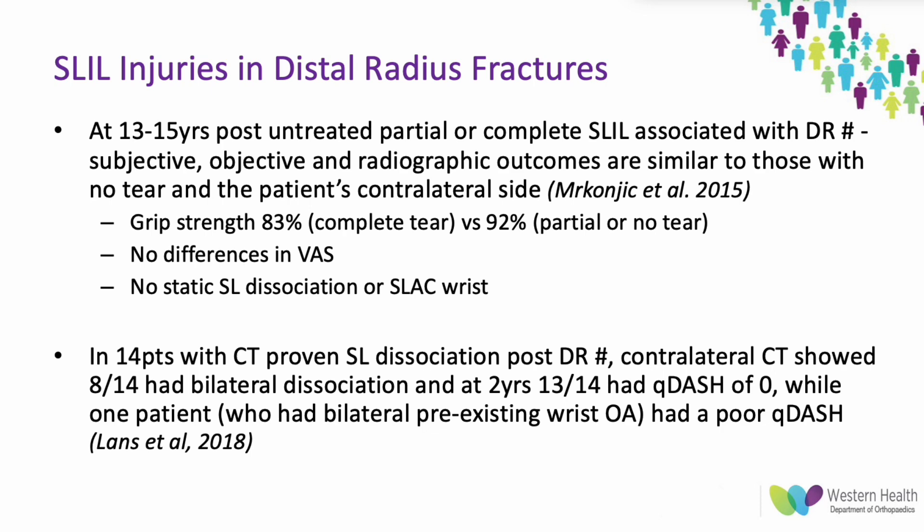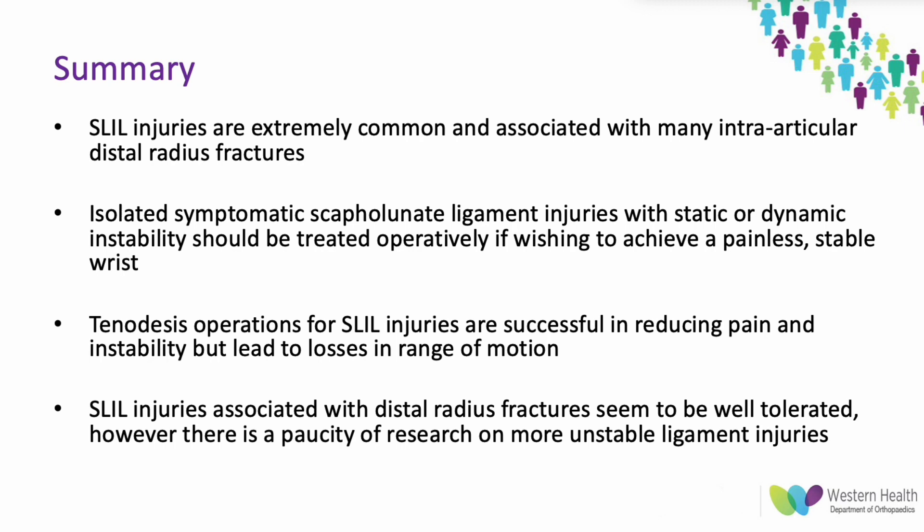In summary, scapholunate interosseous ligament injuries are quite common and associated with many intra-articular distal radius fractures. Isolated ligament injuries with static or dynamic instability are thought to do better when treated operatively to achieve a painless stable wrist. However, SL injuries associated with distal radius fractures seem to be well tolerated based on available — though weak — evidence, and more research is needed. The most successful operations are tenodesis procedures, commonly using an FCR slip to stabilize the scapholunate interval.